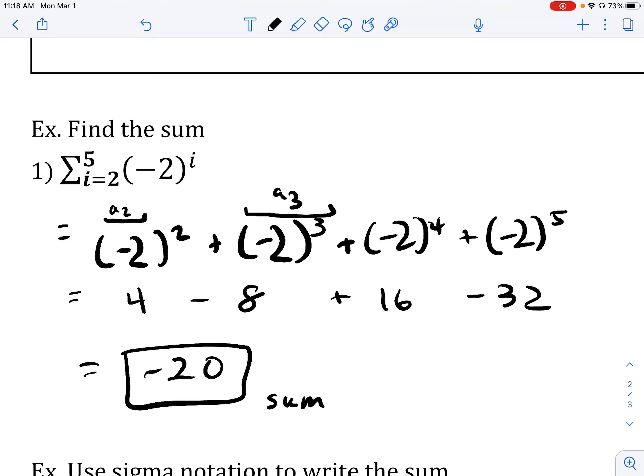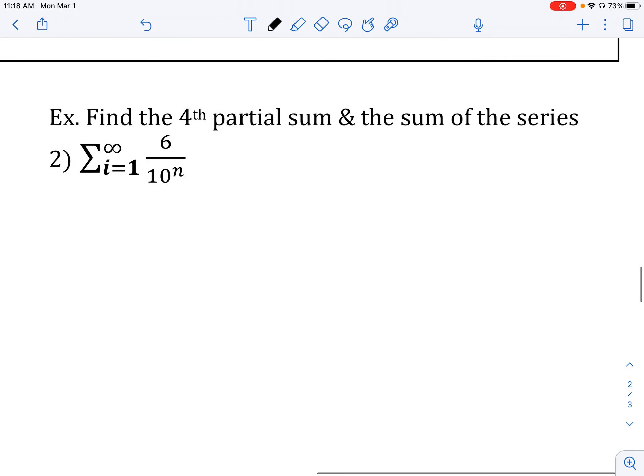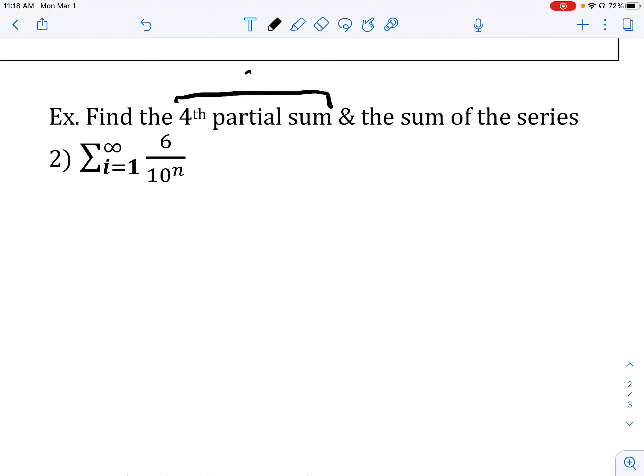Let's try another one now. Let's go ahead and try finding the fourth partial sum, and then also the sum of the series. So the fourth partial sum is just another way of saying the sum of the first four terms. So we're going to add up the sum of the first four terms. We'll notice that our upper index here is infinity, so that means this series has an infinite number of terms. So we're going to start by just trying to find the sum of the first four.